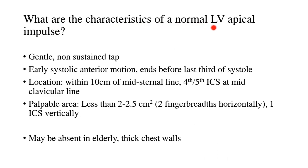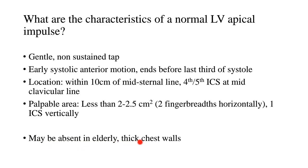What are the characteristics of a normal left ventricular apical impulse? It is a gentle, non-sustained tap. It consists of an early systolic anterior motion which ends before the last third of systole. It is located within 10 cm of the mid-sternal line, either in the 4th or 5th intercostal space at the mid-clavicular line. When palpated, it occupies an area less than 2 to 2.5 cm square — around two finger breadths horizontally and one intercostal space vertically. Note that this normal apical impulse may be absent in the elderly and in those with thick chest walls.